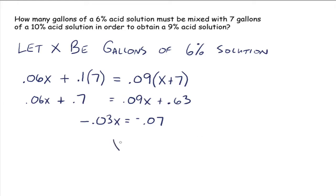And then divide both sides by negative .03. And we get 2.333, and the 3 repeats forever. So it's really 2 and 1/3 that we have right there. So we need to add 2 and 1/3 gallons.